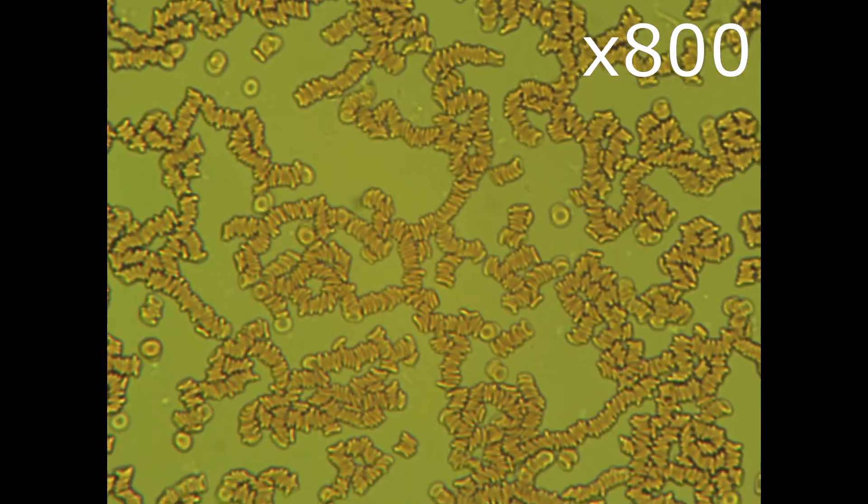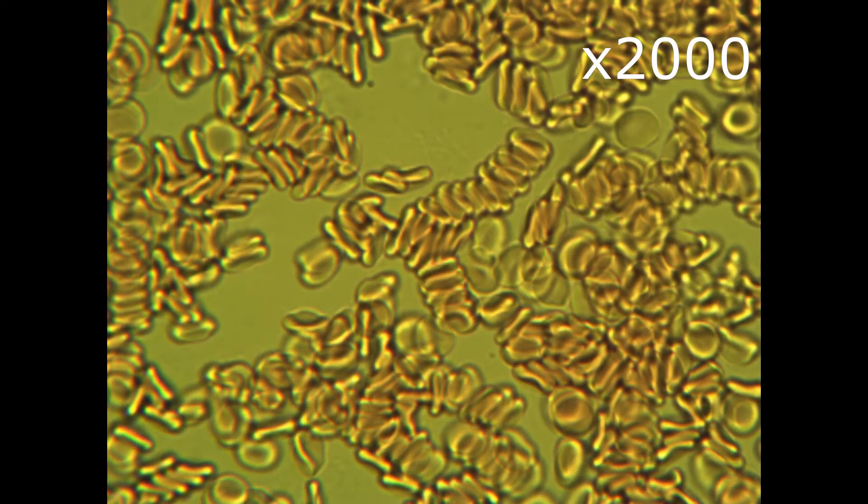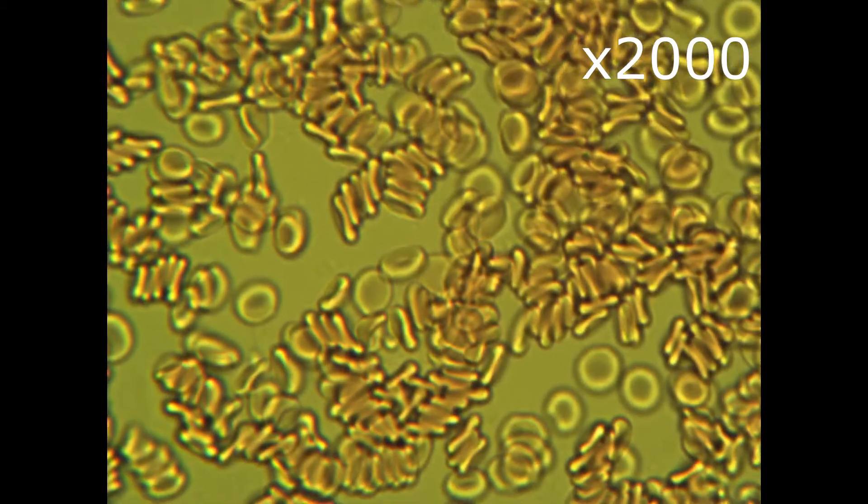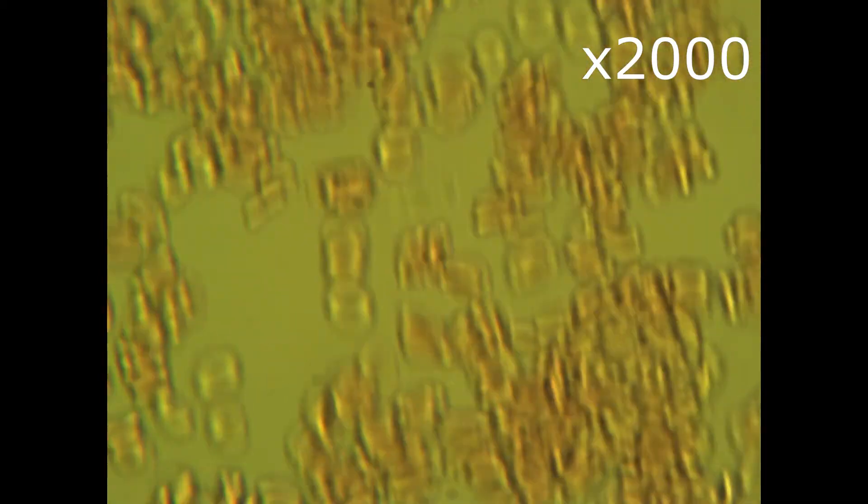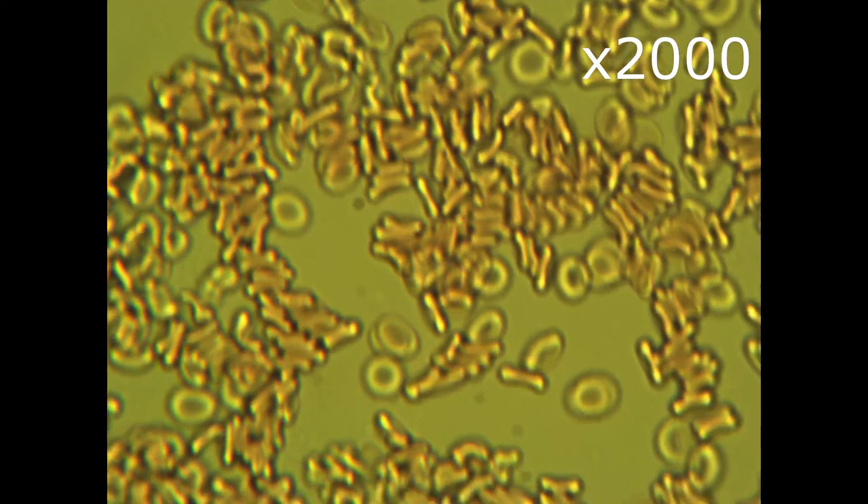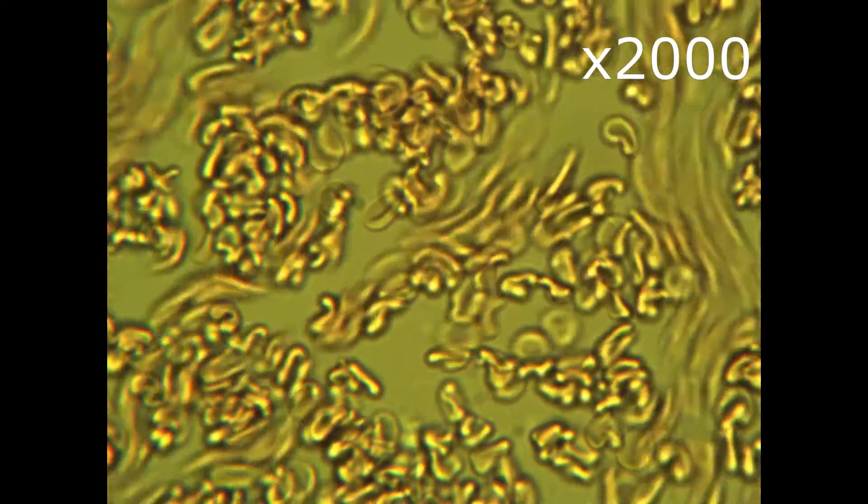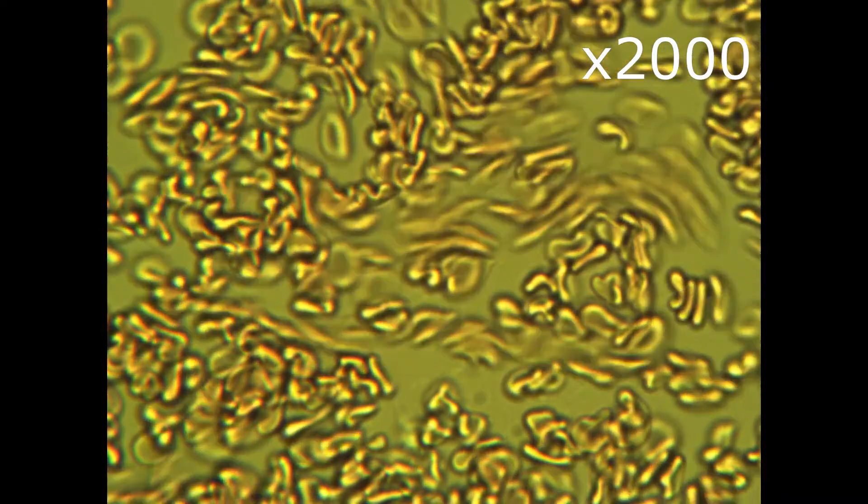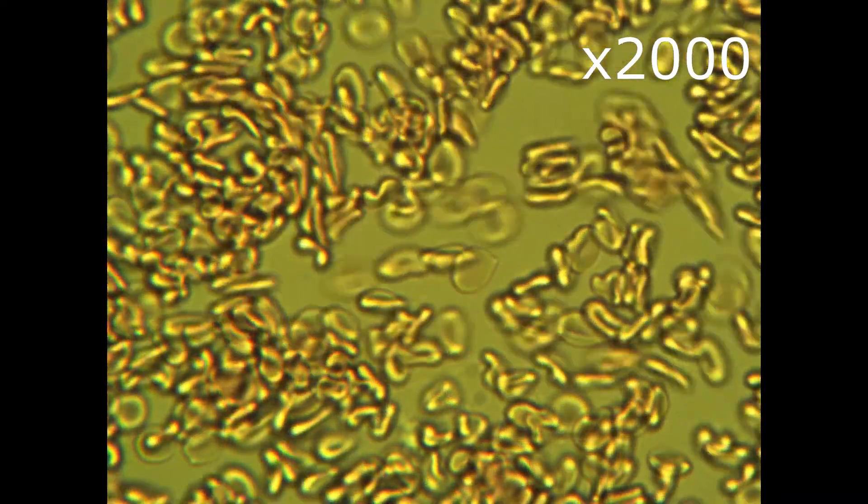Let's zoom 2000 times. Interestingly, in this view we still can observe single erythrocytes. Most of them are glued to each other though. Let's try to move them. Viscosity looks good today. Erythrocytes moving quite well.